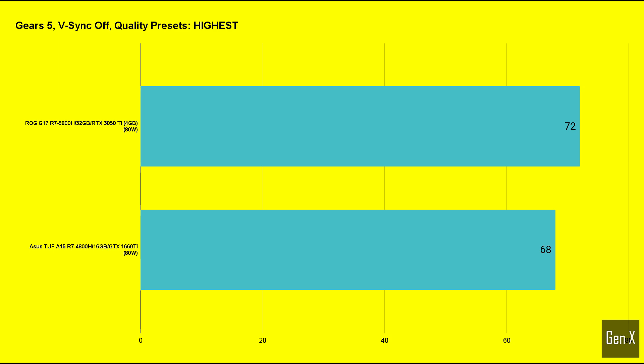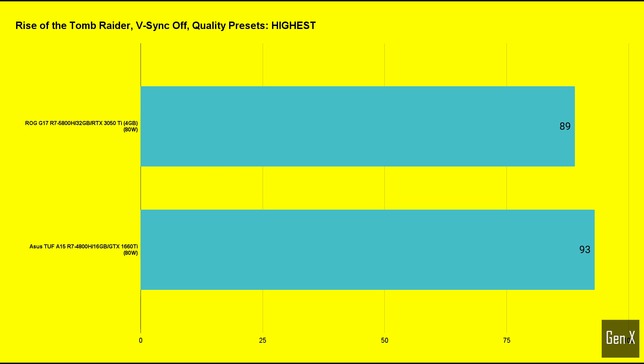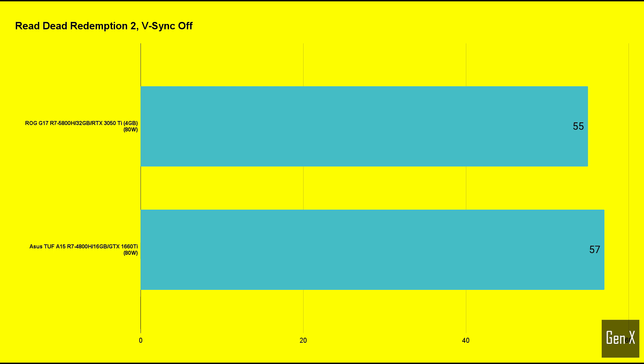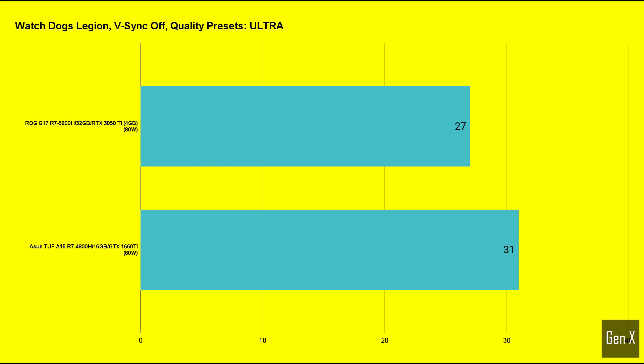Gears 5 saw the system slightly favor the RTX 3050 Ti, while in Gears Tactics the results were once again reversed. In Rise of the Tomb Raider, the 1660 Ti trounces the RTX 3050 Ti, while both GPUs have the same rated wattage at 80 watts. The cards were neck-and-neck in Red Dead Redemption 2, but the 6GB video RAM of the 1660 Ti will certainly make a difference if you decide to up the settings. Watch Dogs: Legion is a graphically intensive game, and you would need an RTX 3060 level GPU to play at 1080p ultra with smooth frame rates. Again, the RTX 3050 Ti is hampered by the limited video RAM for heavier titles, and the 1660 Ti edges out the win.